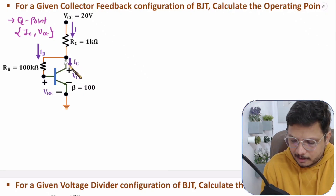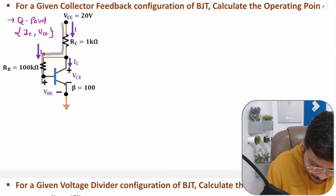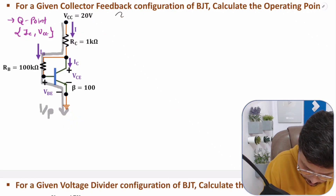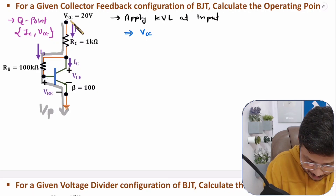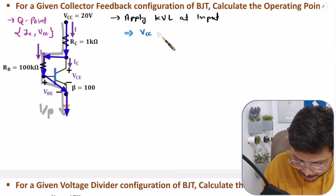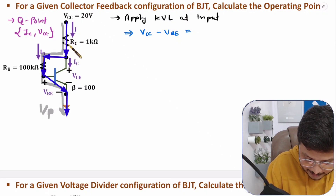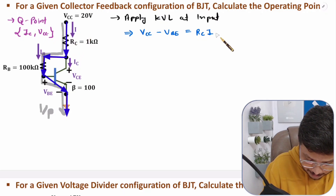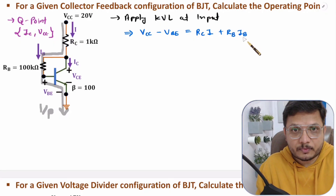To calculate the operating point, we apply KVL. I'll apply KVL at the input side first. In this input loop, the voltage is VCC, so let me write VCC first. Another voltage in this loop is VBE, which is happening from plus to minus, so I write minus VBE. That equals: in this loop the first resistance is RC, through RC the current is I, and another resistance is RB, through which current is IB.